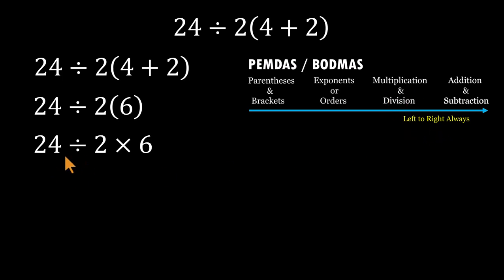So starting from the left, 24 divided by 2 equals 12. Bring down the 6. 12 times 6 equals 72. That makes the correct answer 72, not 2.